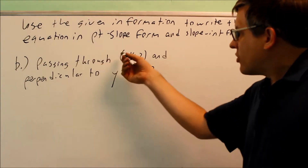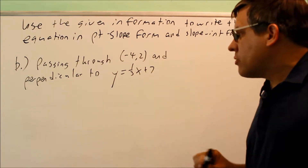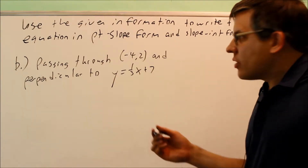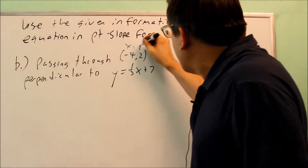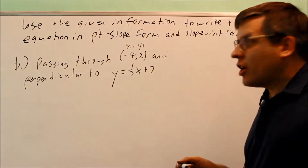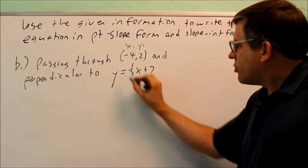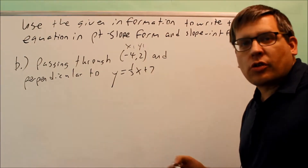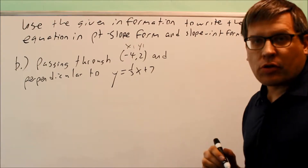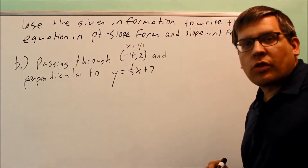Part B: the line is passing through negative 4, 2, and it is perpendicular this time to y equals one-third x plus 7. Again, I'm given x1 and y1. But this time I want to find a slope that is perpendicular to the given line. The perpendicular slope is going to be the opposite reciprocal slope. The original slope given is one-third.